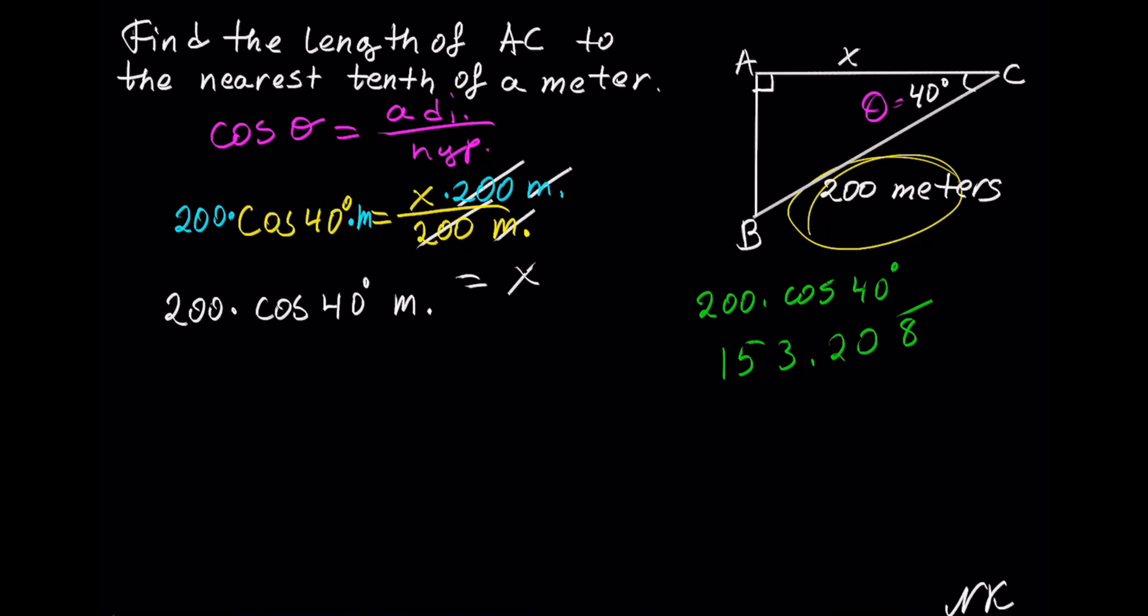We have to round off to the nearest tenth of a meter. So we have to round this number off to the point 2. We look at the number to the right of it. In this case, we have a 0.